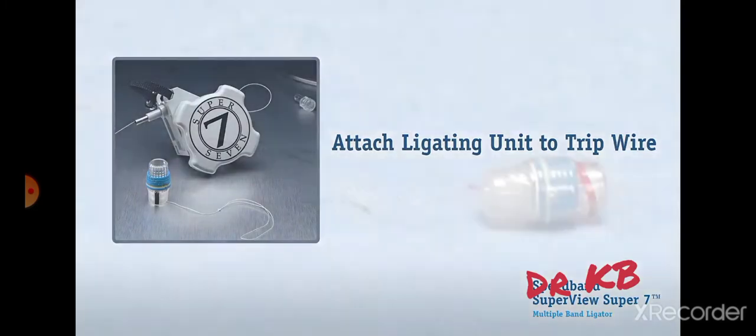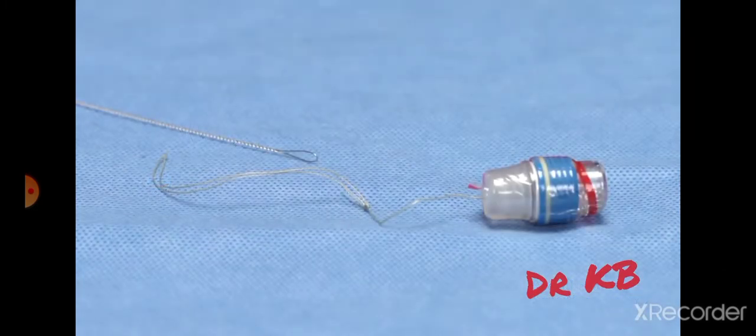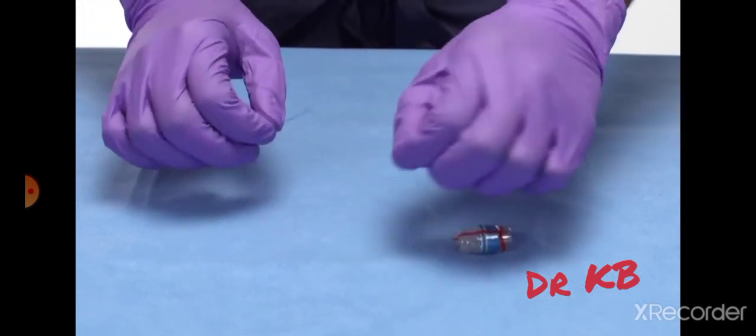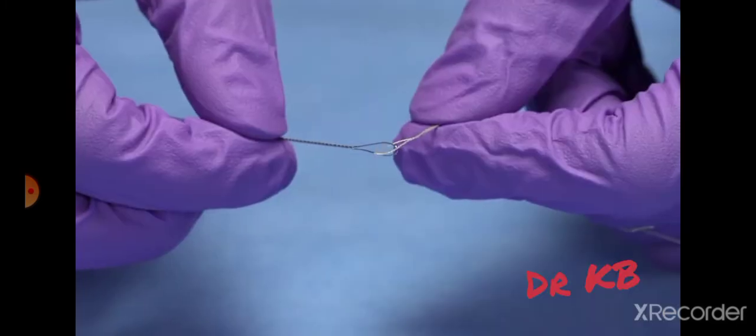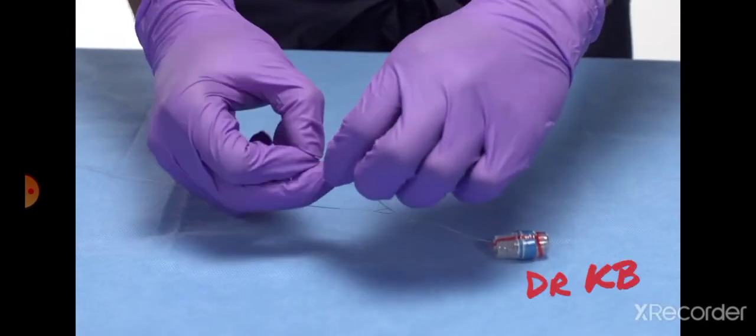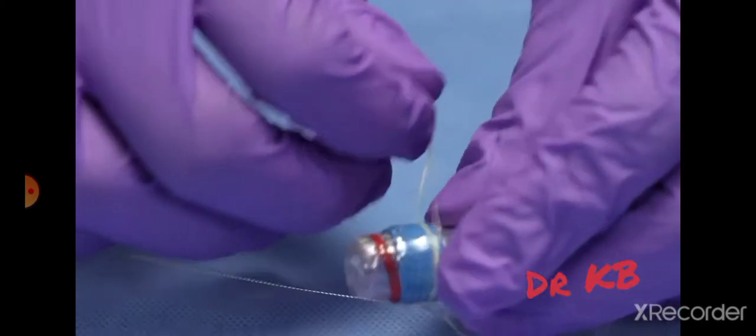Next, attach the ligating unit to the tripwire. Attach the pulling loop of the ligating unit to the wire loop connector on the distal end of the tripwire by threading the pulling loop through the tripwire loop. Then thread the ligating unit through the pulling loop. Pull to tighten.